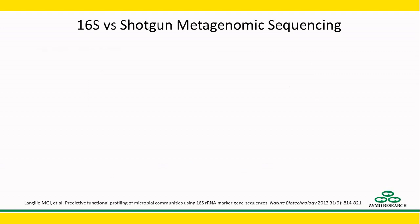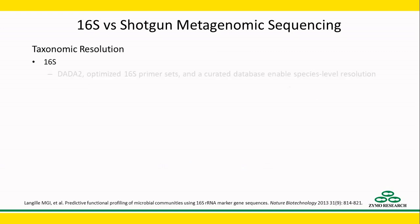Now let's discuss taxonomy resolution. The taxonomy resolution of 16S sequencing depends on the variable regions targeted, the organism itself, and the sequence analysis algorithm. In recent years, species level identification has been achieved with the help of error correction tools like DADA2 and improved primer designs.